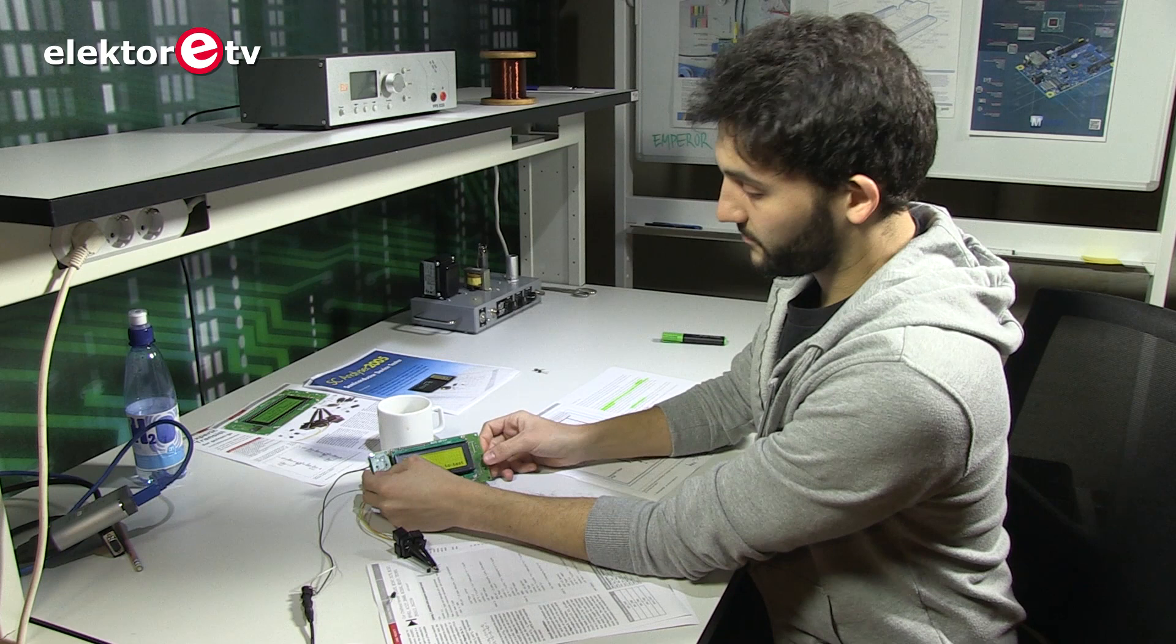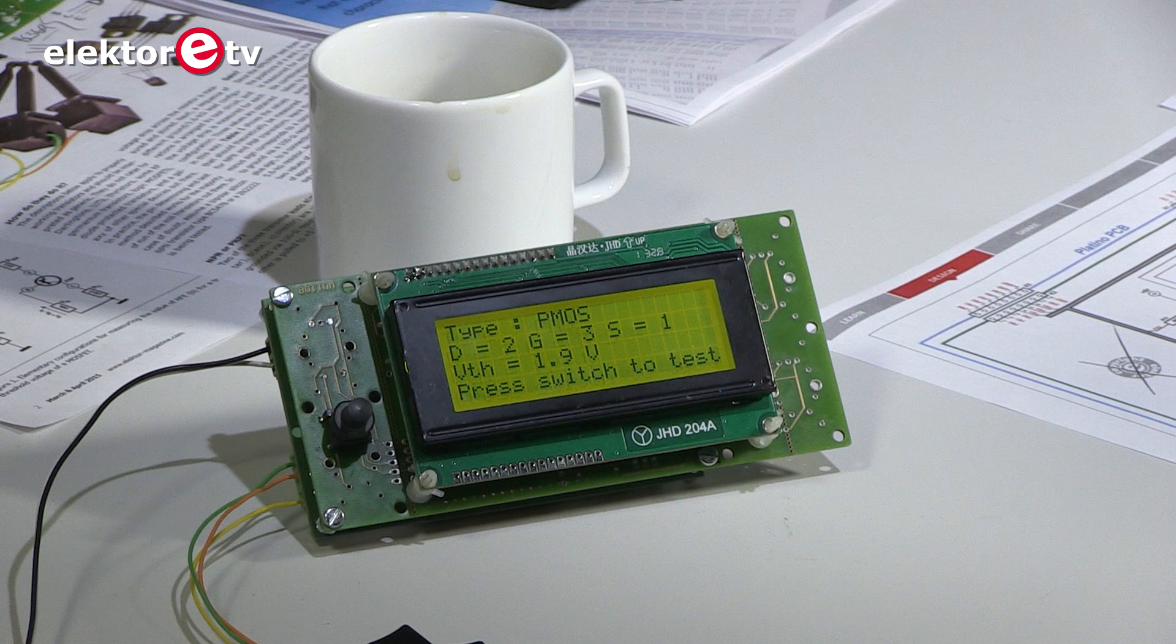Okay, so now in this case, for this transistor we have a PMOS, the type is a PMOS. And we know that the drain is test point number two, the gate is test point number three, and the source is number one.